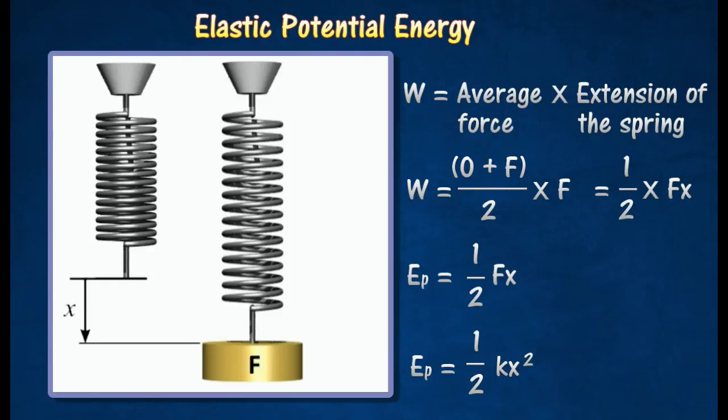From Hooke's law, F is equal to KX. The elastic potential energy stored in the spring is also given by 1 over 2 KX square.